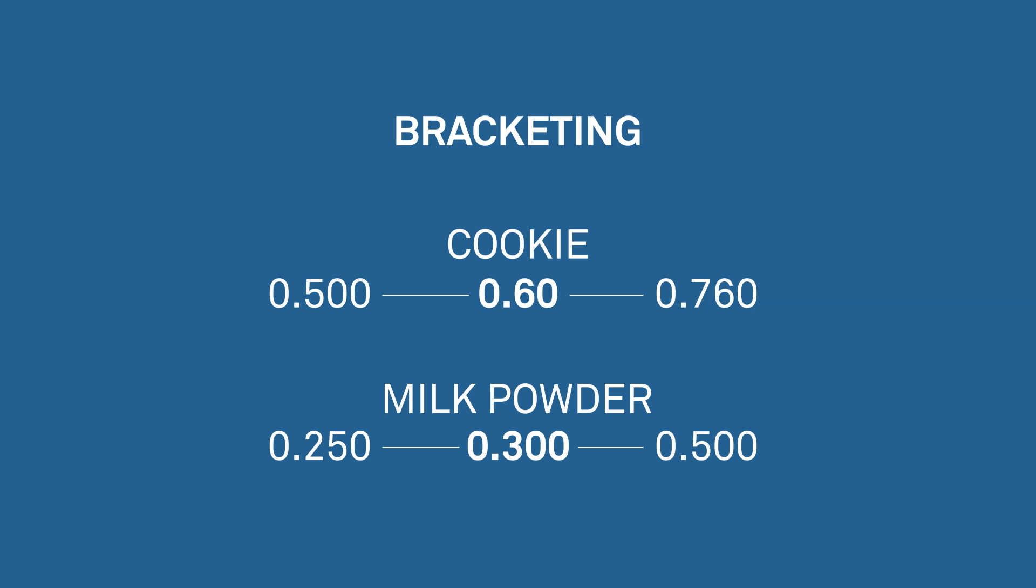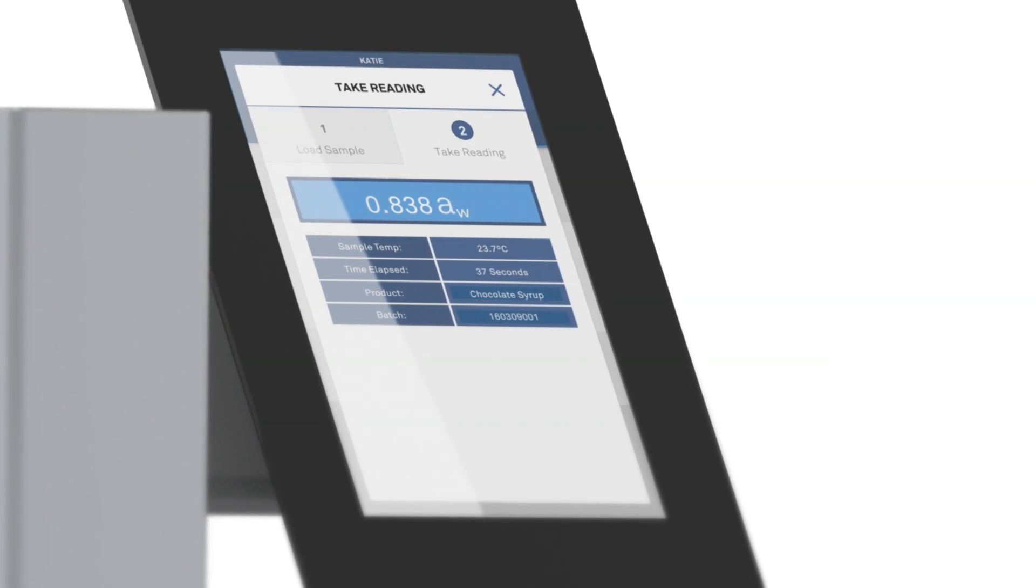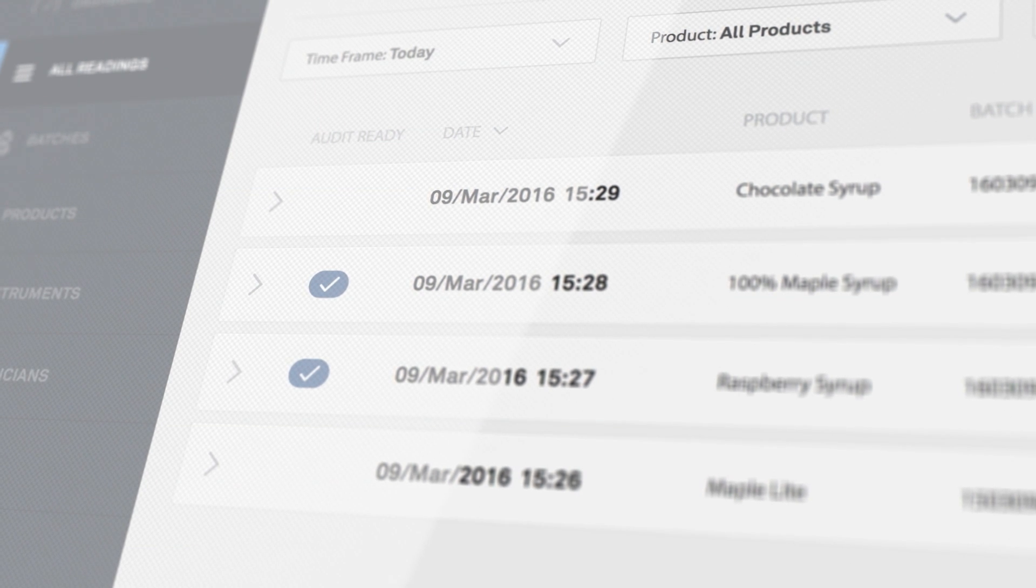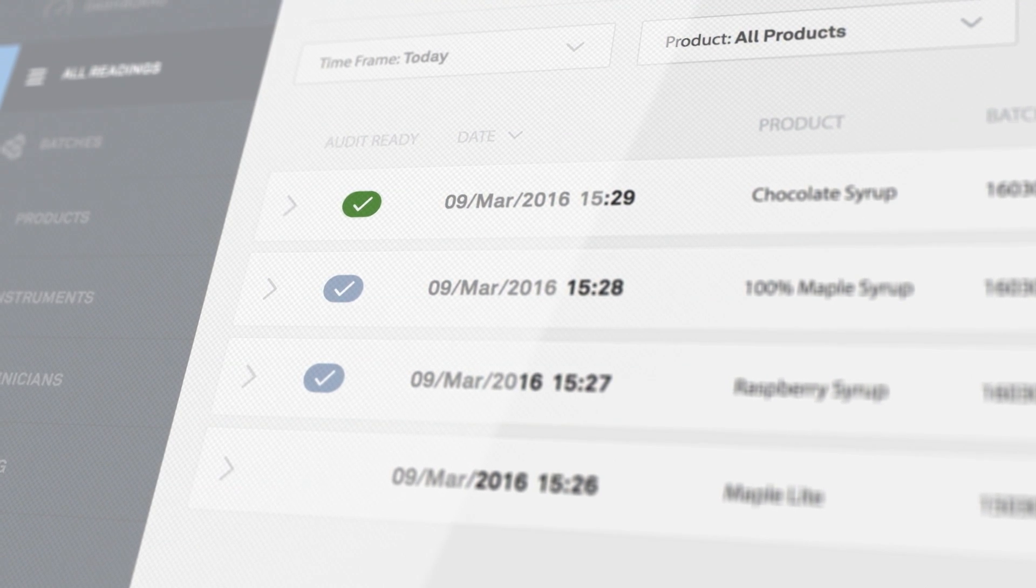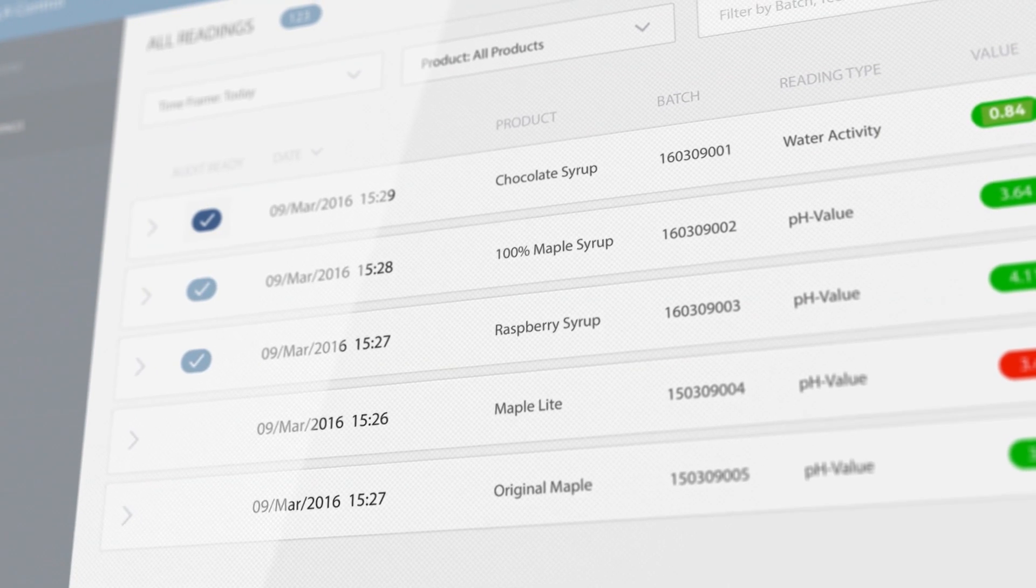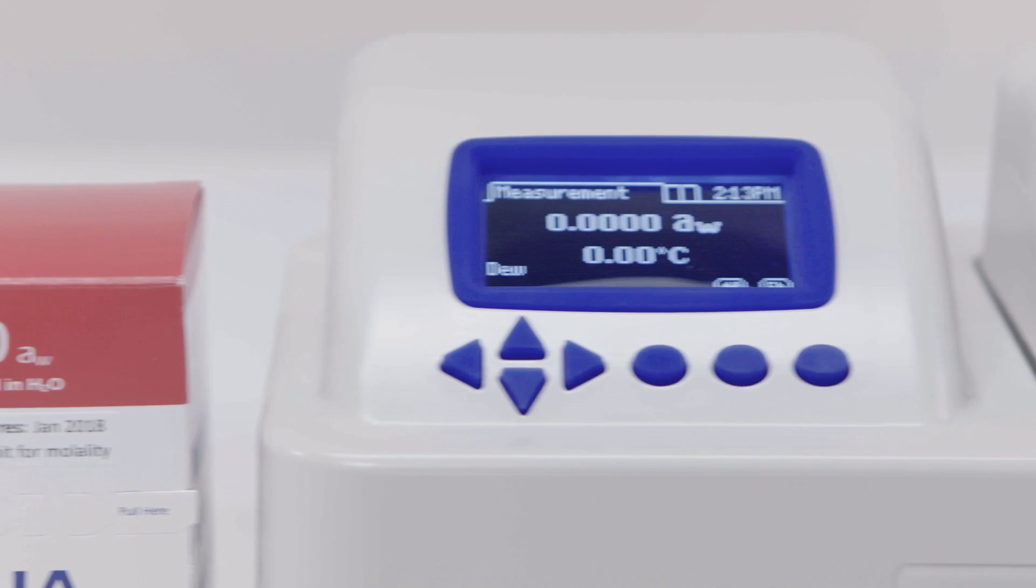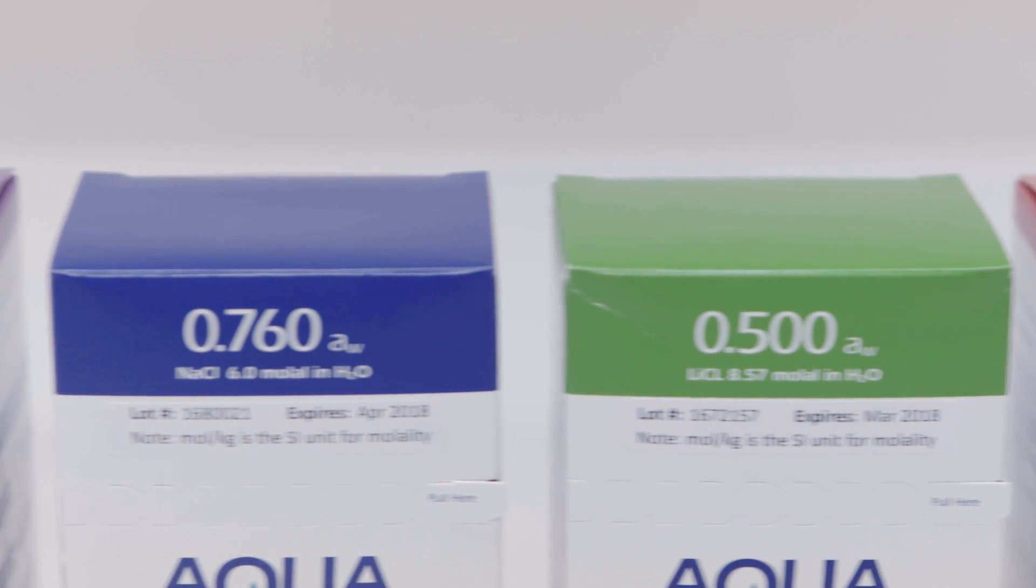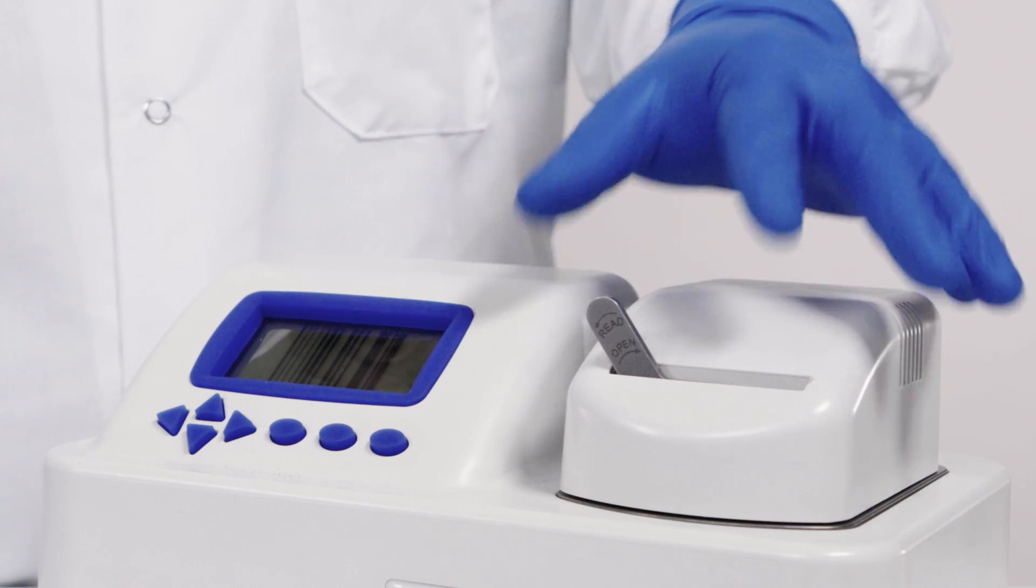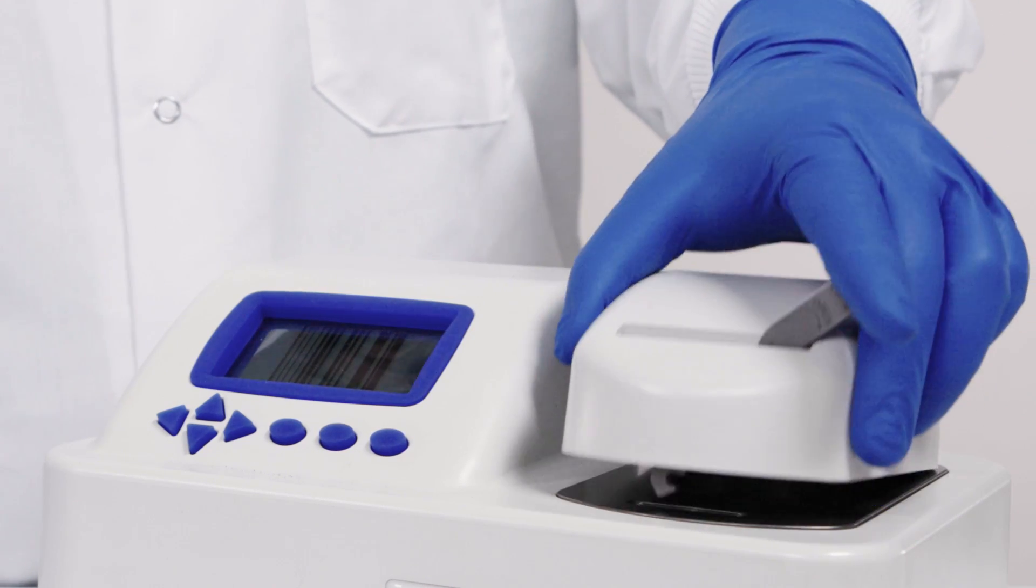We are running our verification in Scala, so the verification record can be attached to all the measurements we take this shift, but you can also record the details of your verification manually. Any reading within 0.003 of your solution's water activity is fine, as long as you're using the chilled mirror sensor. If you're checking the volatile sensor, any reading within 0.01 of your standard is fine.